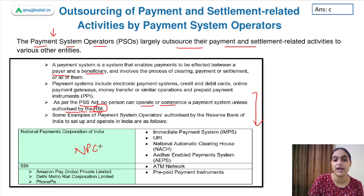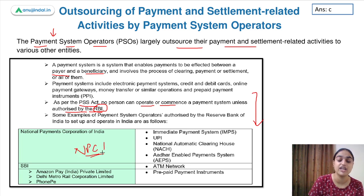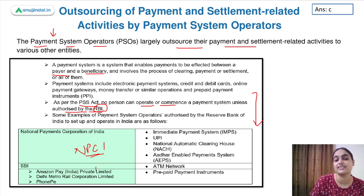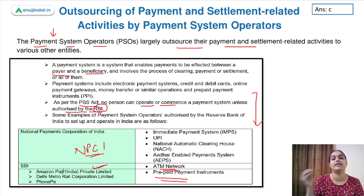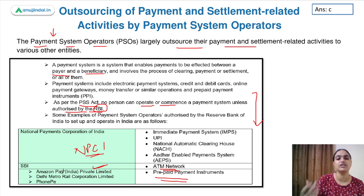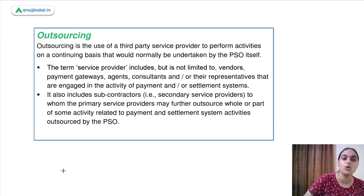NPCI provides the UPI platform, IMPS, NACH, and recently also came up with the E-Rupee. Banks like SBI which offer ATM networks are also payment system operators. Then we have different PPI providers like Amazon Pay, Delhi Metro, PhonePe, and Google Pay. All these are your payment system operators and they can outsource some of their activities.